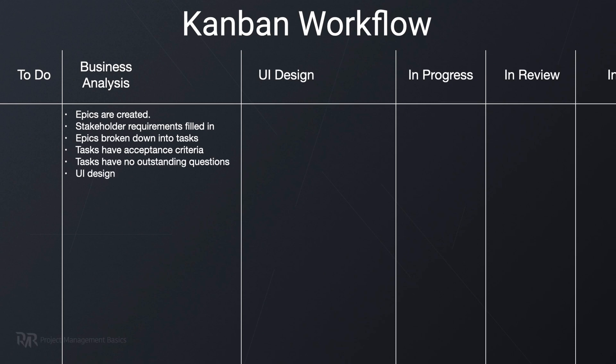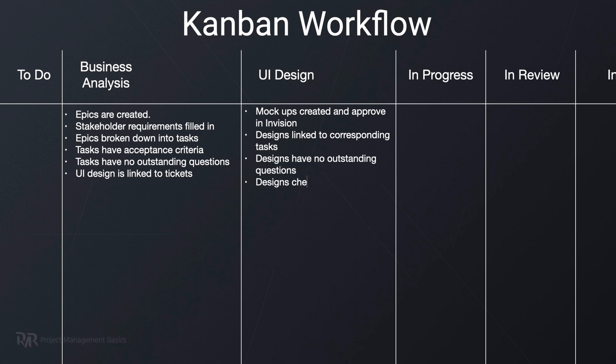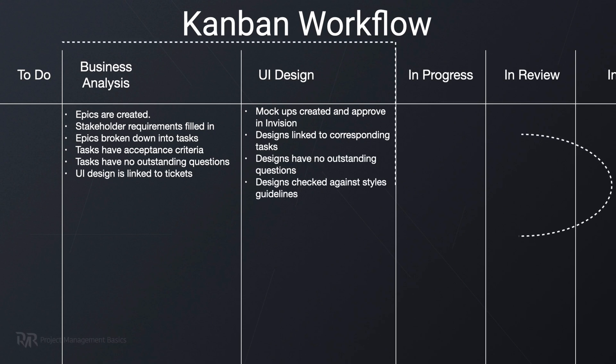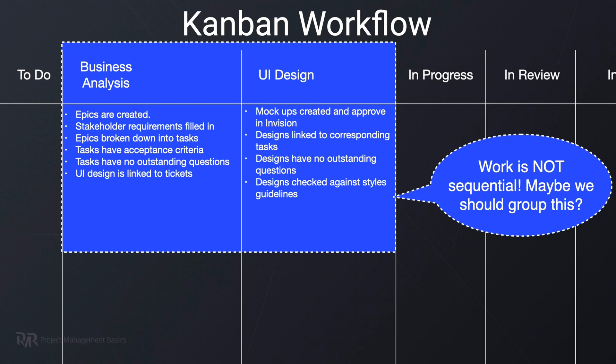Here's a practical way to develop a perfect Kanban board: start by listing all the stages of your workflow, then list the definitions of done for each column, and finally review the whole workflow and see where you can group stages into one column. You must do this exercise together with your team — they can help you find gaps in the process or things done differently in the real world.